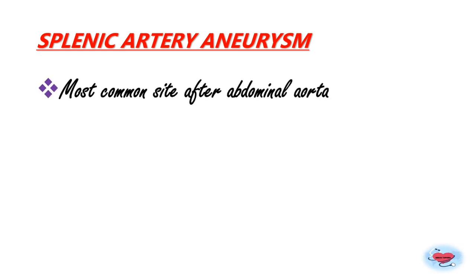The most common abdominal aneurysm is abdominal aortic aneurysm; the second most common is splenic artery aneurysm. Splenic artery aneurysm is most common in women and is associated with atherosclerosis. It can also be congenital. In acute pancreatitis patients, splenic artery pseudoaneurysm may also occur.